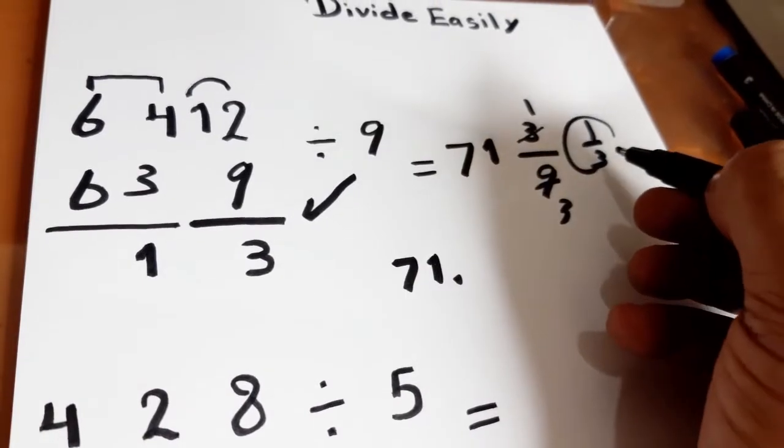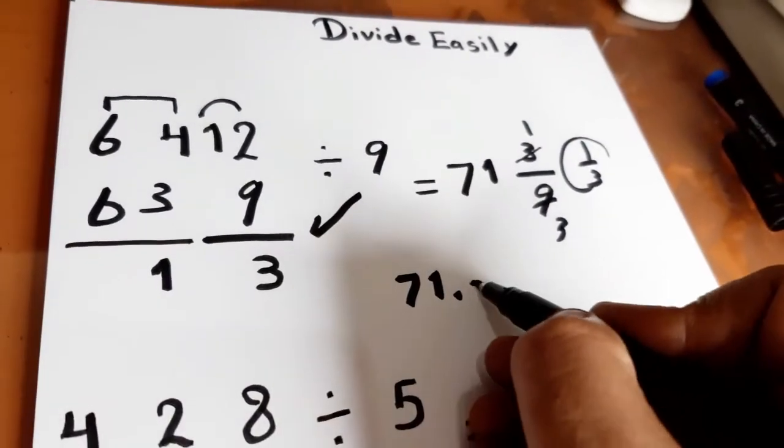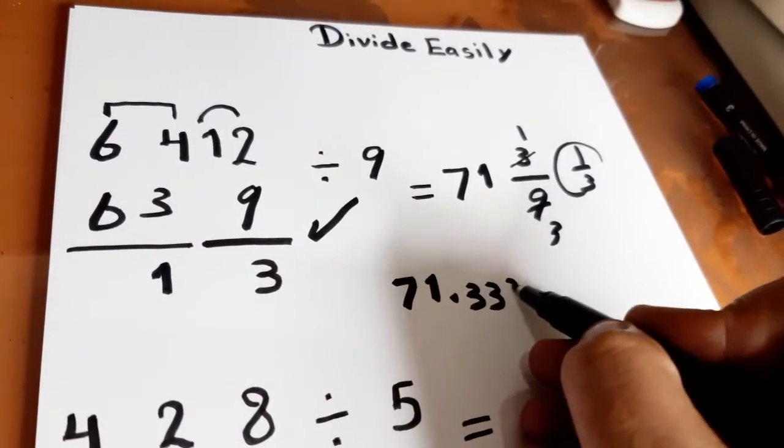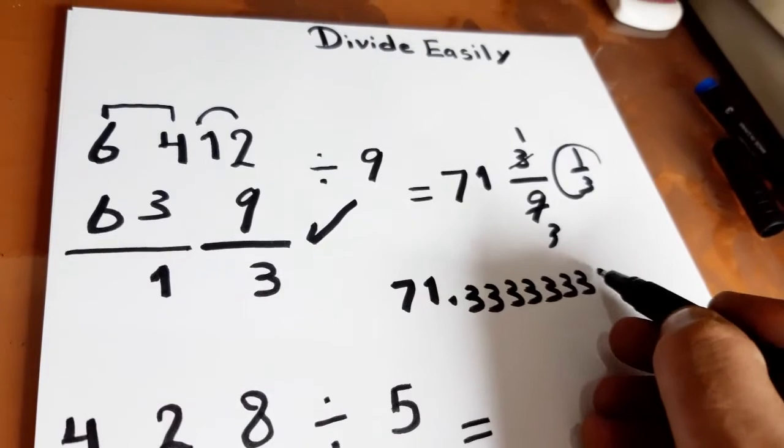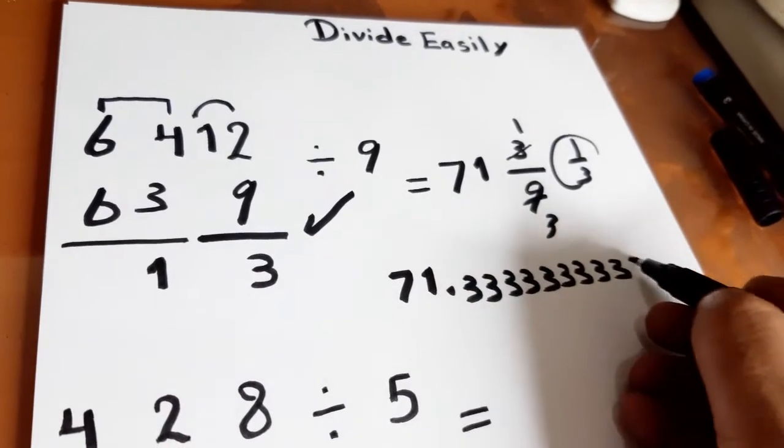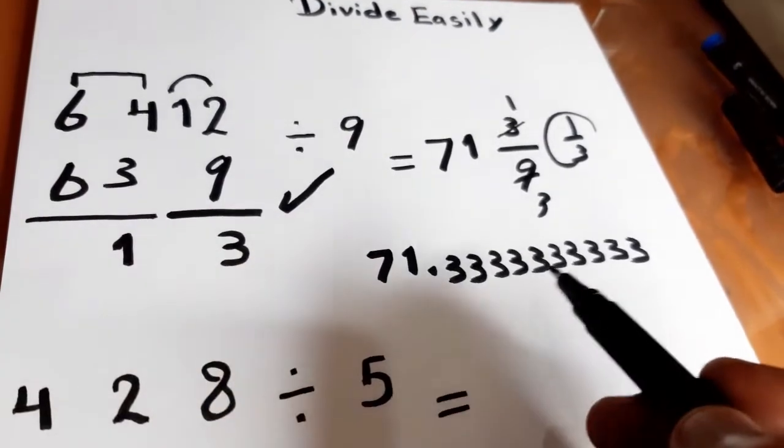1/3 appears on the calculator as 10 threes. 1, 2, 3, 4, 5, 6, 7, 8, 9, 10. The answer appears in this way on the calculator.